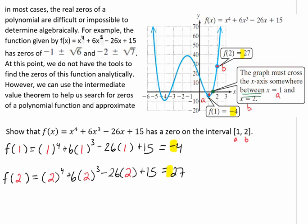Since our f(1) and our f(2) have opposite signs, then by the intermediate value theorem, we know that the function has at least one zero on the interval from 1 to 2.